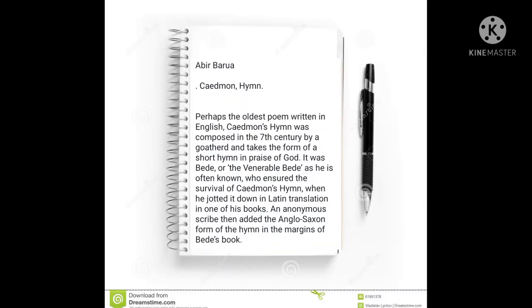I would like to invite my next member. Hi, this is Abel. Today I am going to talk about Caedmon's Hymn. Perhaps the oldest poem written in English, Caedmon's Hymn was composed in the seventh century by a cowherd and takes the form of a short hymn in praise of God. It was Bede the Venerable who ensured the survival of Caedmon's Hymn when he recorded it in Latin translation in one of his books. An anonymous scribe then added the Anglo-Saxon form of the hymn in the margins of Bede's book.